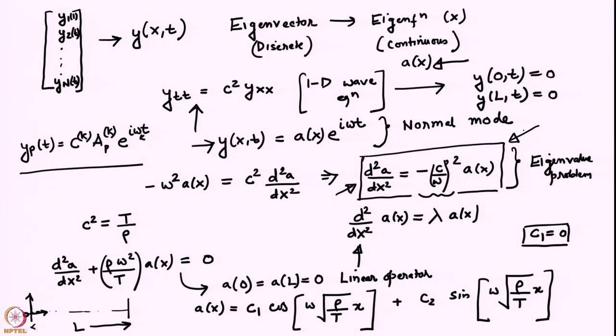We were doing normal mode analysis on the one-dimensional linear wave equation. We had found that the eigenmode in the discrete case goes over to an eigenfunction, which we called A of x. This eigenfunction satisfies an eigenvalue problem, and only for certain values of the frequency will there be non-trivial eigenfunctions, because of particular boundary conditions which have to be satisfied by the eigenmodes.